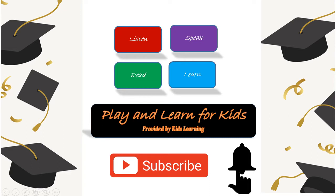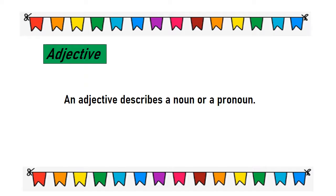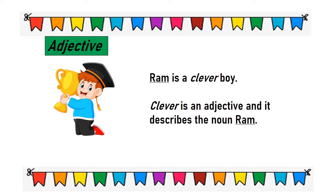Let's learn about adjectives, the describing word. What is an adjective? An adjective is a word that describes a noun or a pronoun. For example, Ram is a clever boy. Here the word clever is an adjective as it describes the noun Ram.